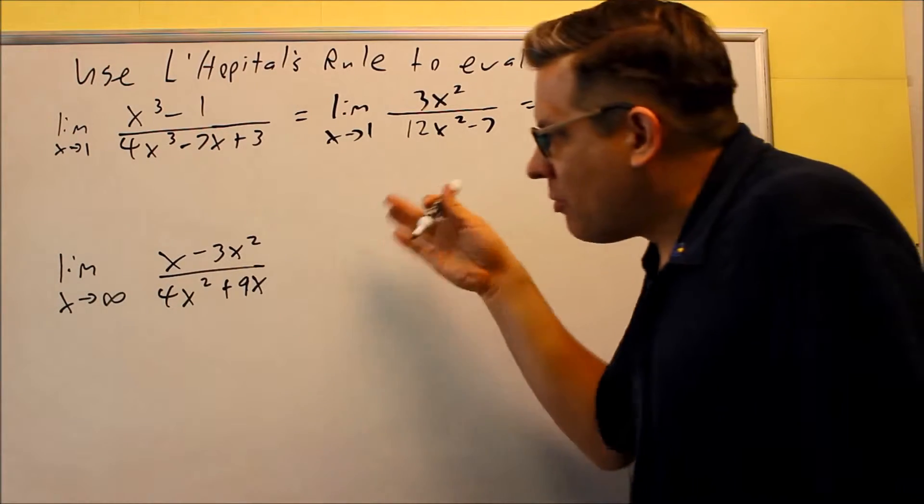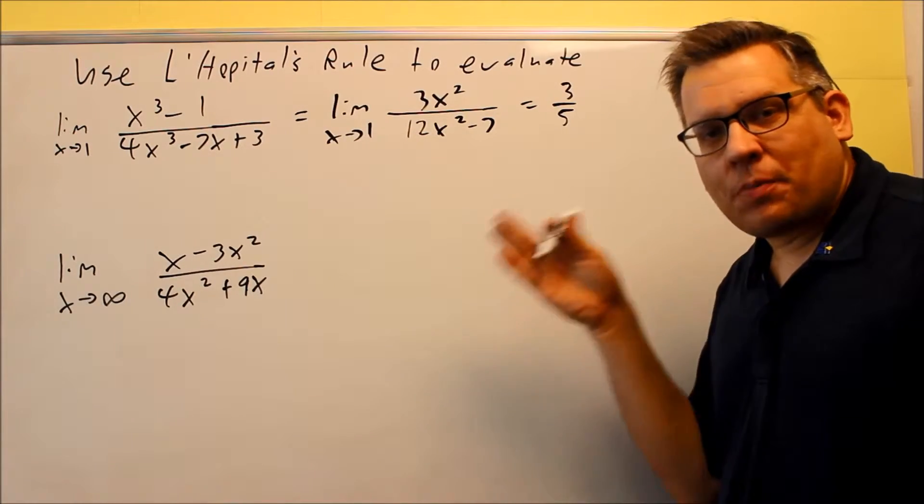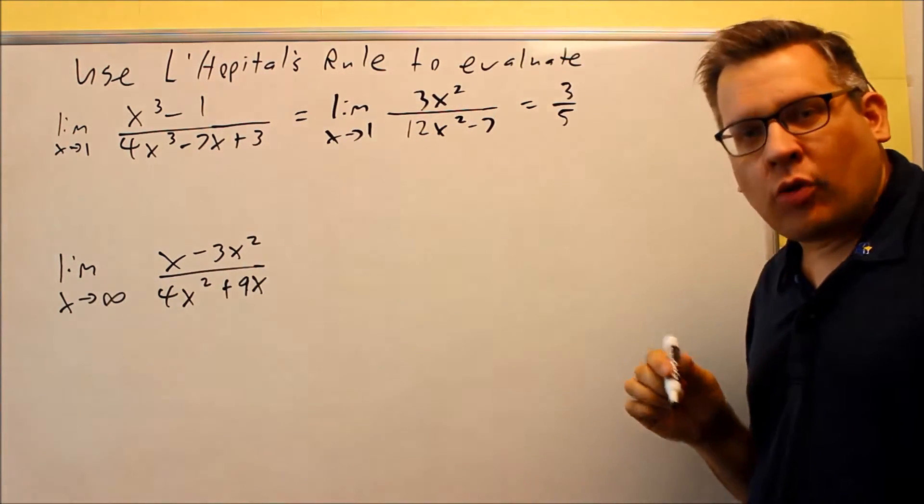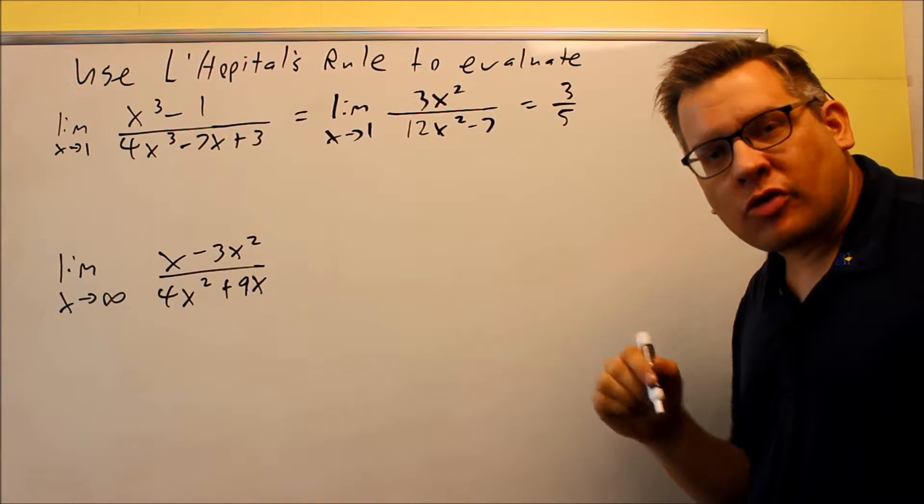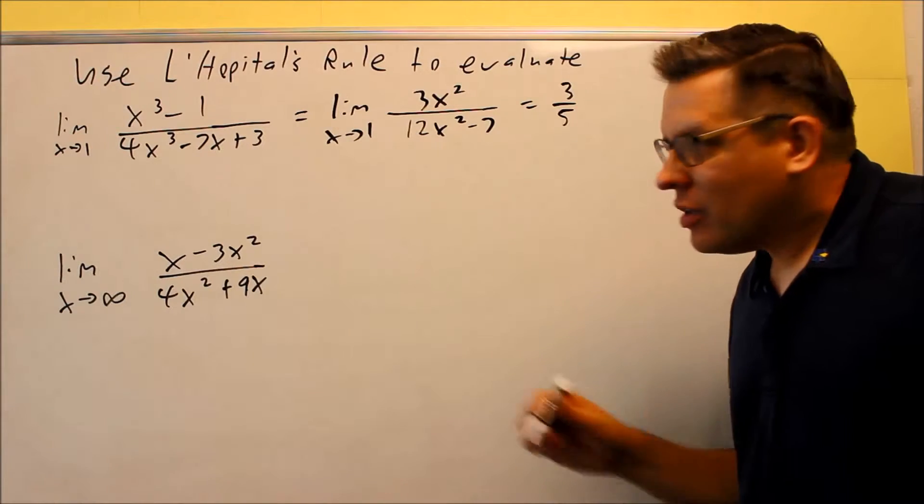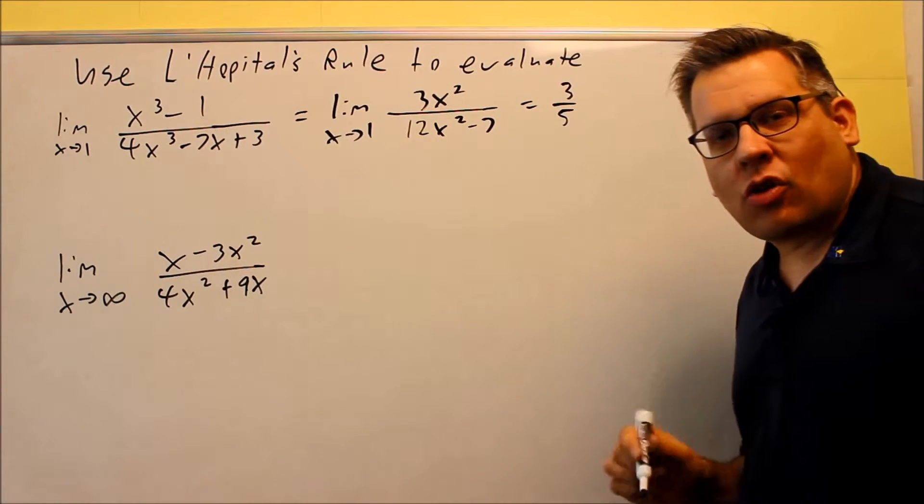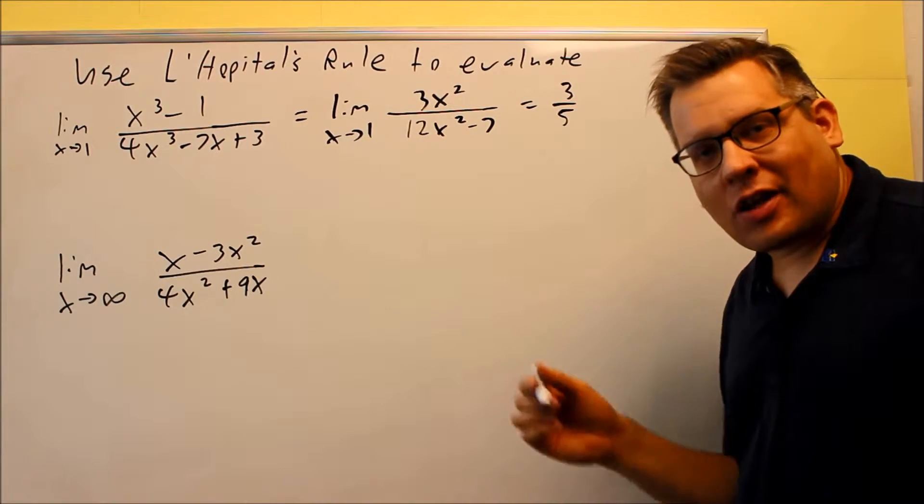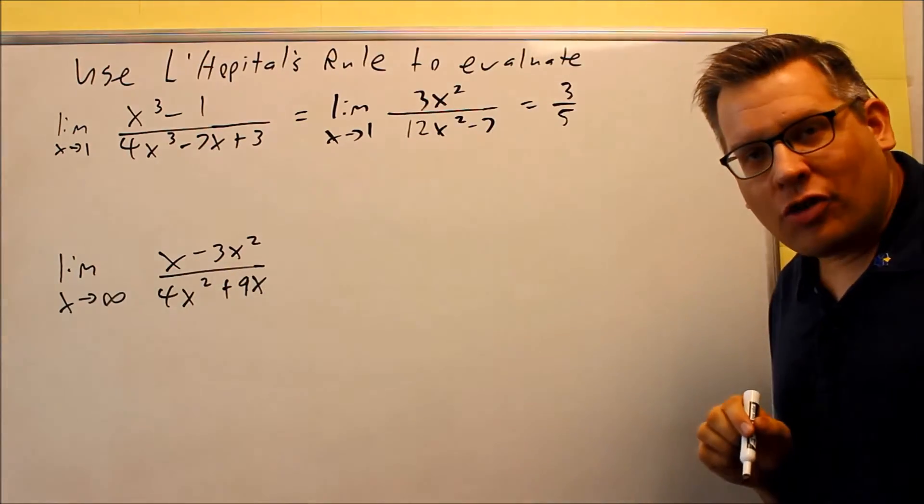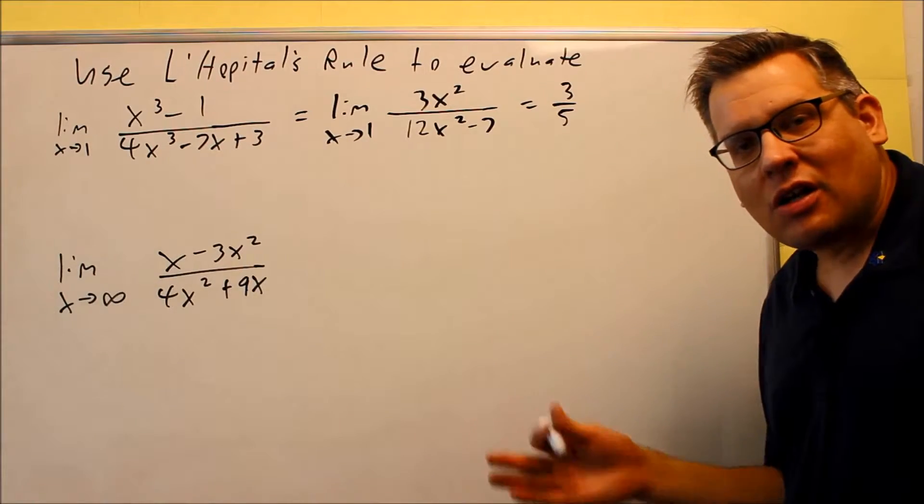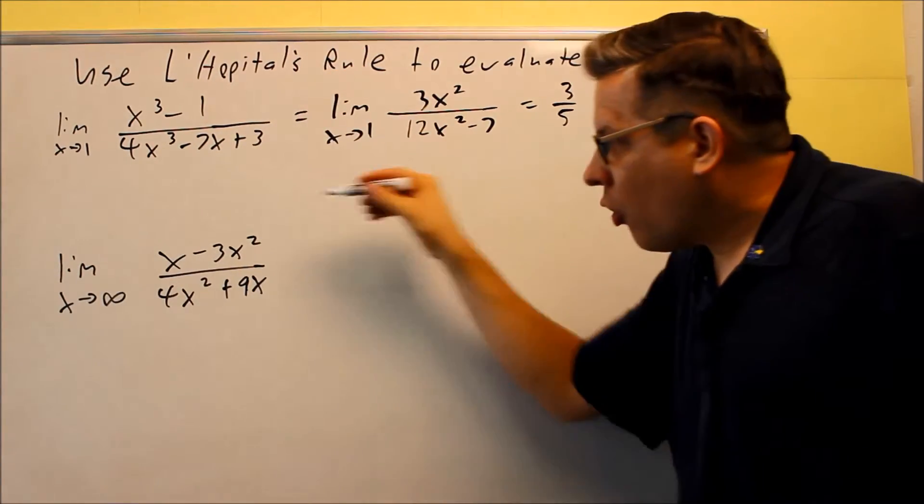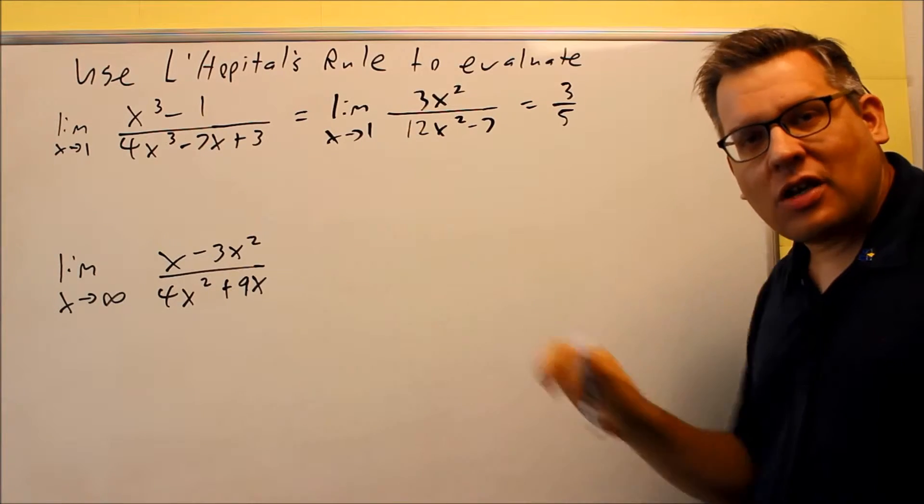Now in some textbooks there's actually a proof that will prove that L'Hôpital's rule not only works for the indeterminate form zero over zero, but it also works for infinity over infinity. Now originally we defined this as only working for zero over zero, but like I said it can be approved that you can also apply L'Hôpital's if you have infinity over infinity. So any kind of problems that you see in this section where you get zero over zero like this one or infinity over infinity like this case, you can apply L'Hôpital's.